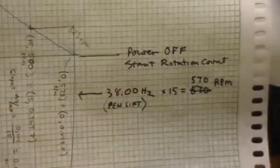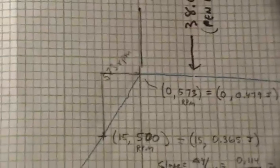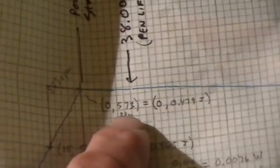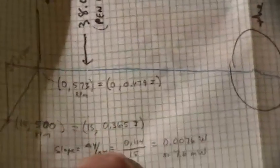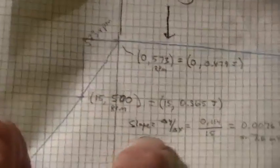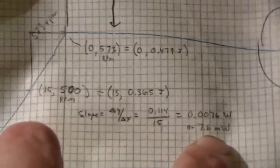Power off, start rotation count. And with this, 570 RPM. Over here we have 573 RPMs equal to 0.479 joules — that's from the rotor's moment of inertia calculation. So there's the immediate slope there, and that translates to 7.6 milliwatts.